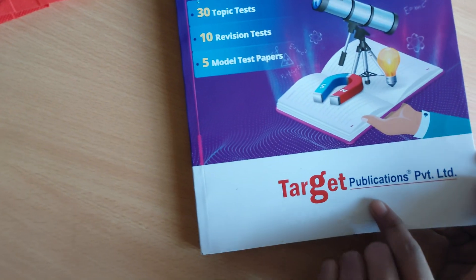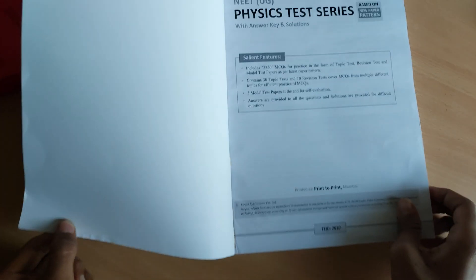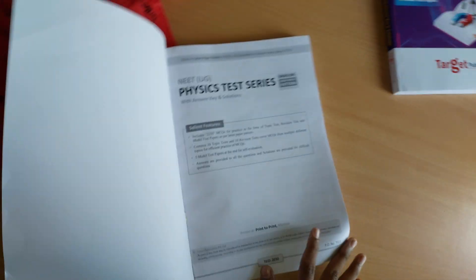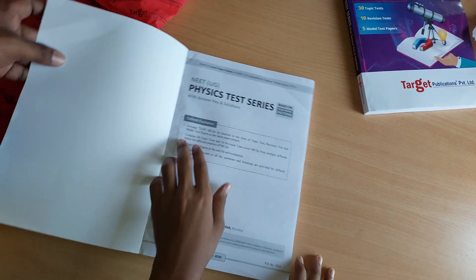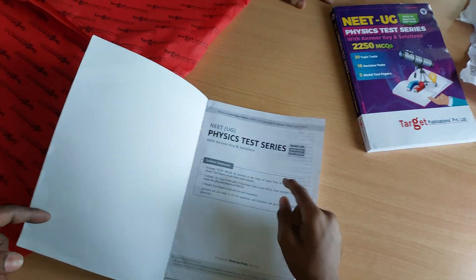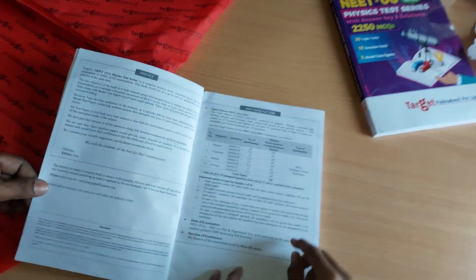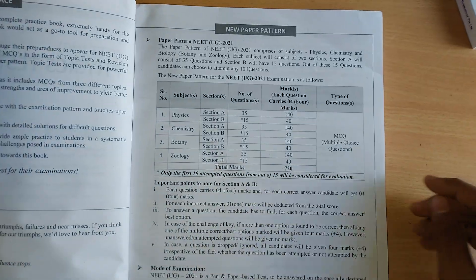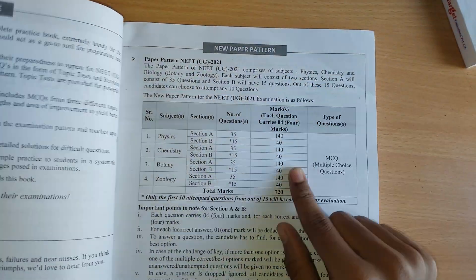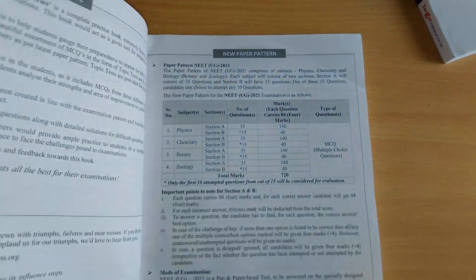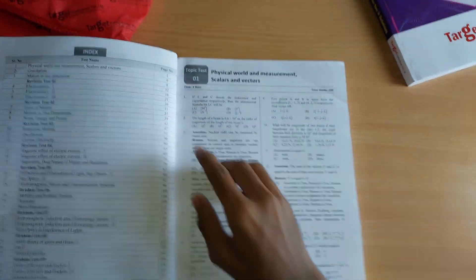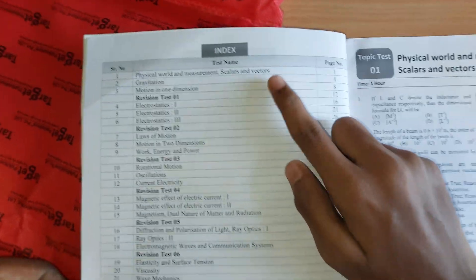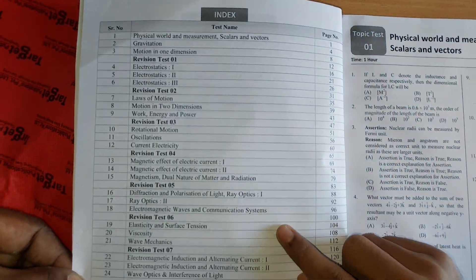It's from Target Publications Private Limited. In the front page, he has given his salient features and the main features of the book. Let's go to another page. Here are the latest topics and the pattern of NEET from 2021 to 24. This is the index page. Here we can see the chapters which we have in the physics subject.